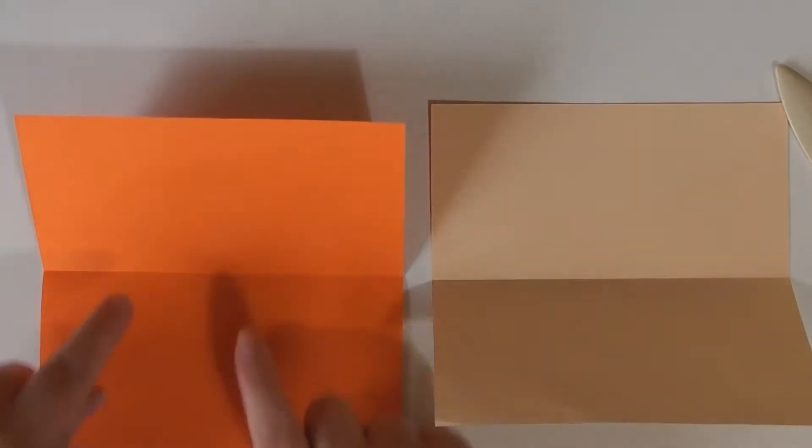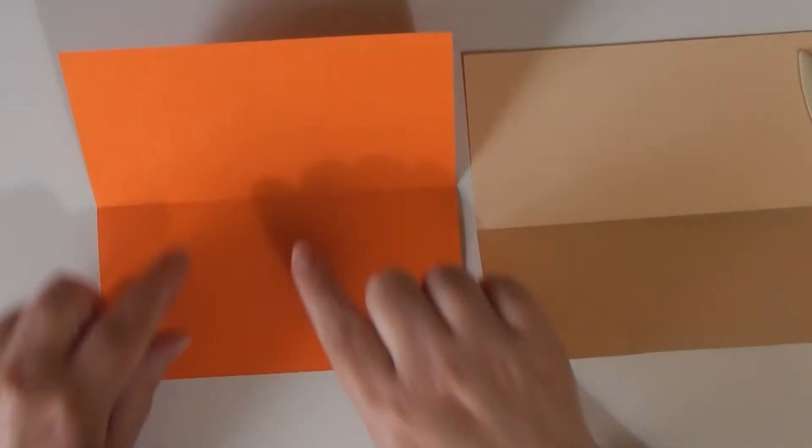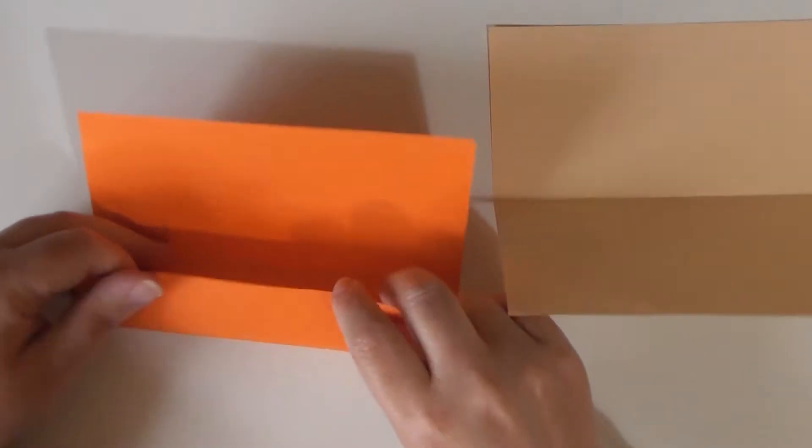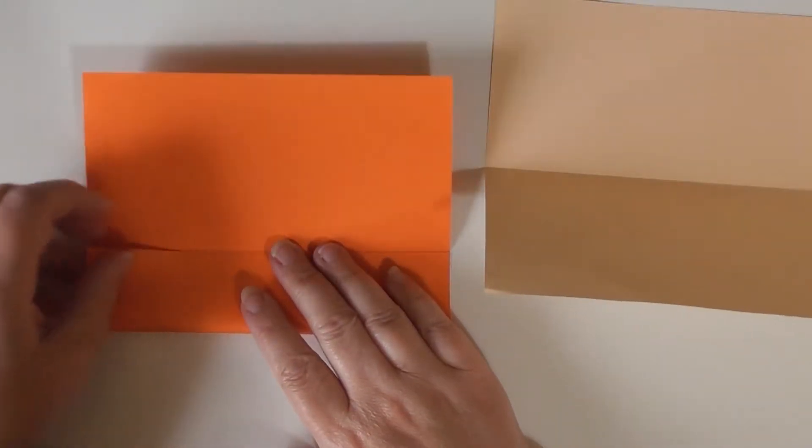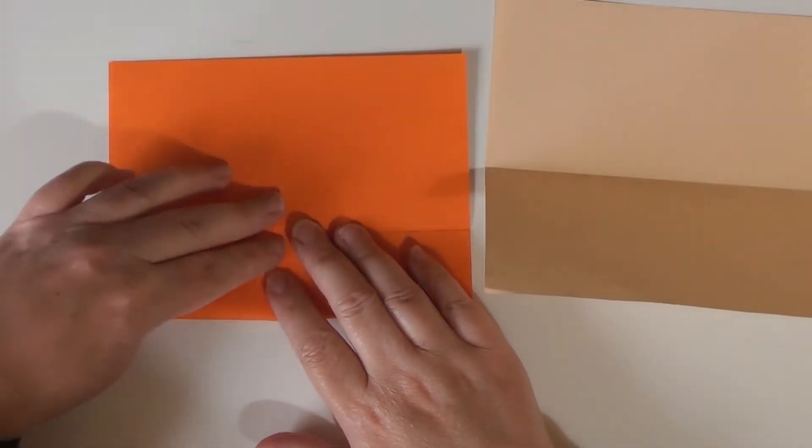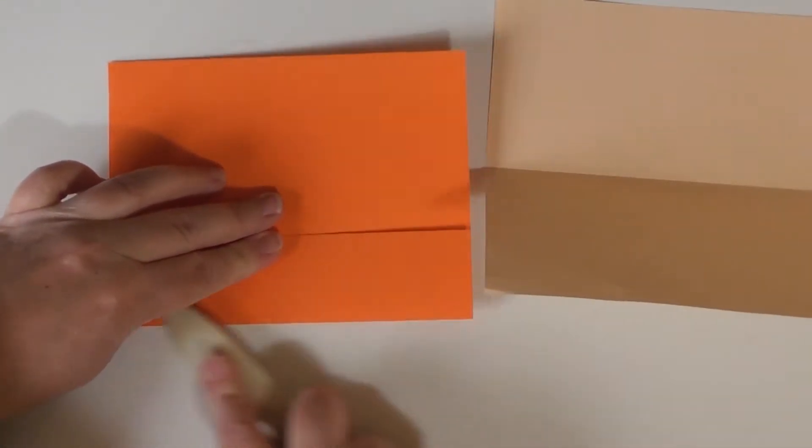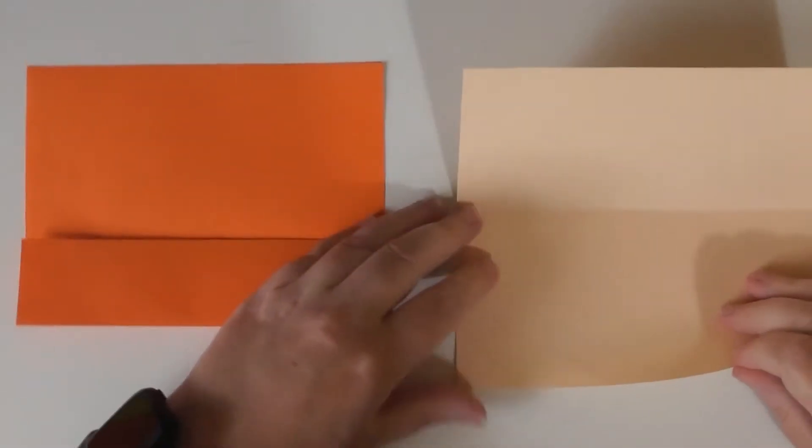Now we're going to take the ends, the edges of the paper, and we're going to fold it into that center line we've just created. So just pop them up and then do the same on this one.